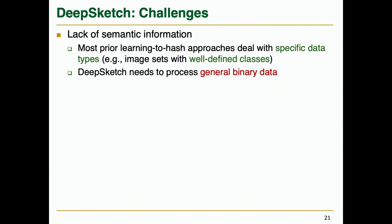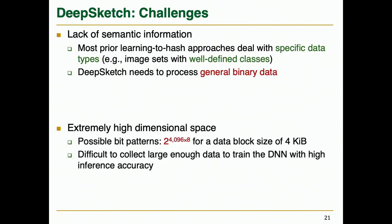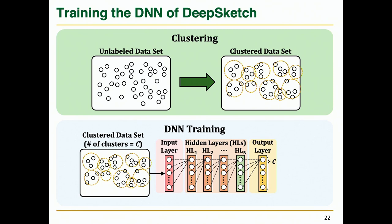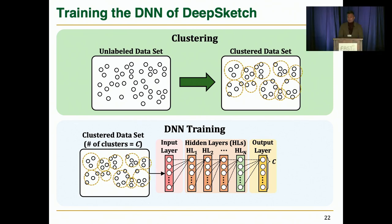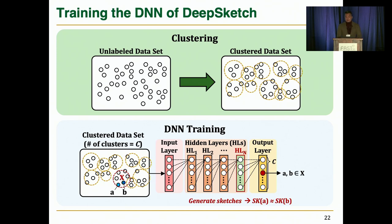While the key idea is simple, it was not straightforward to apply the learning-to-hash method for reference search in delta compression due to the lack of semantic information in our target dataset. Most prior learning-to-hash approaches deal with specific data types, but DeepSketch needs to process general binary data. Therefore, our target data has an extremely high dimensional space, making it challenging to collect a training dataset diverse enough to train a DNN with high inference accuracy. These challenges led us to perform clustering-based DNN training that first clusters an unlabeled dataset collected from various real-world workloads and performs supervised learning using the clustering results, training the DNN to accurately infer a given data block's cluster and generating similar sketches for similar blocks.